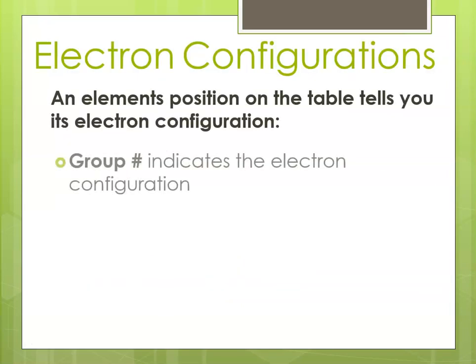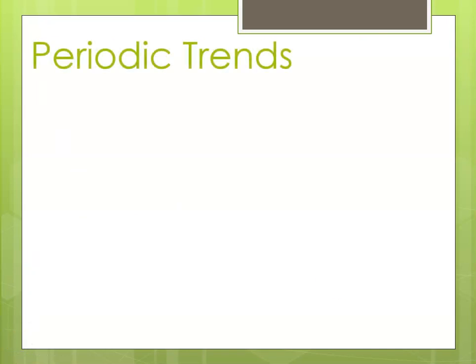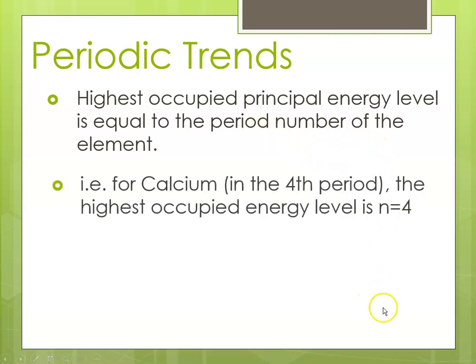Remember that the group number is giving you the electron configuration, where the row number is indicating the highest occupied principal energy level. So the highest occupied principal energy level is equal to whatever period number — and remember periods are the rows — so for example, calcium is in the fourth period, meaning the highest occupied principal energy level would be n equals 4.